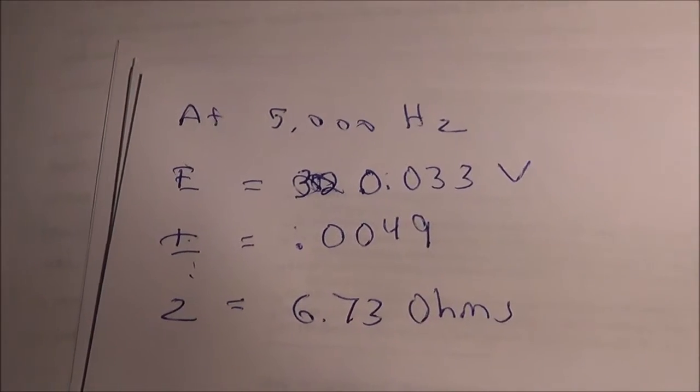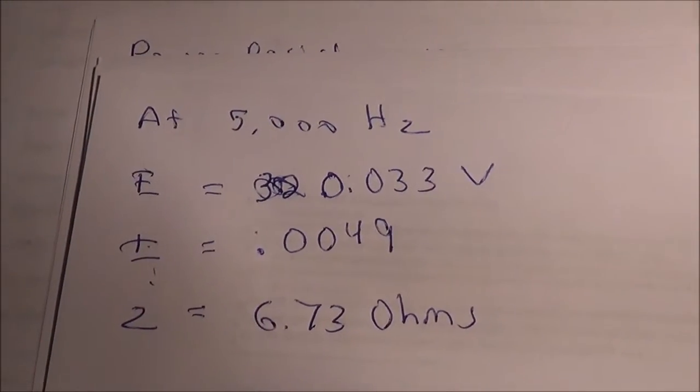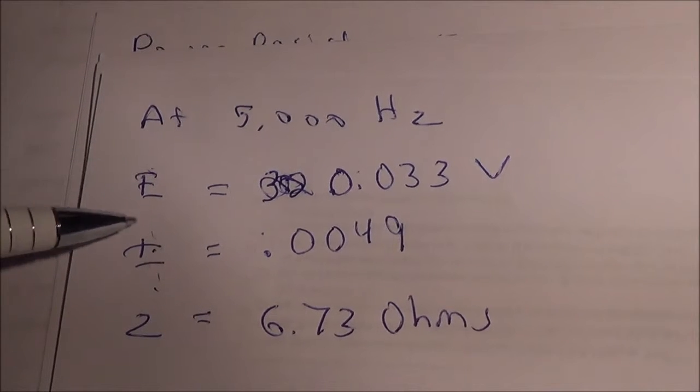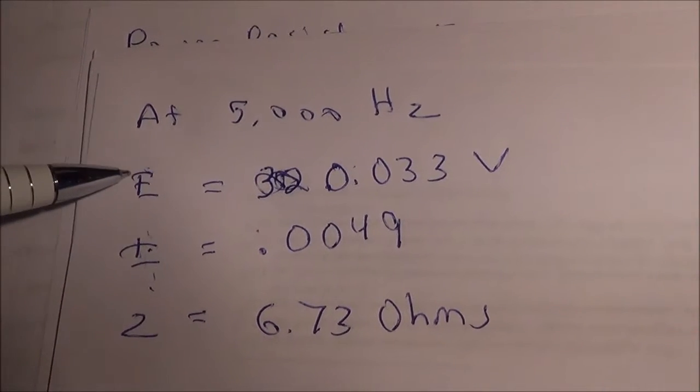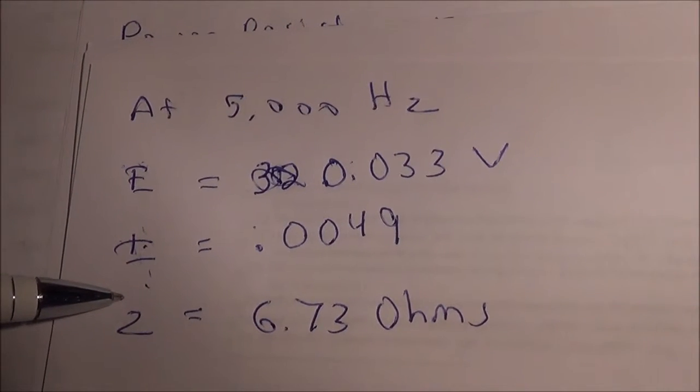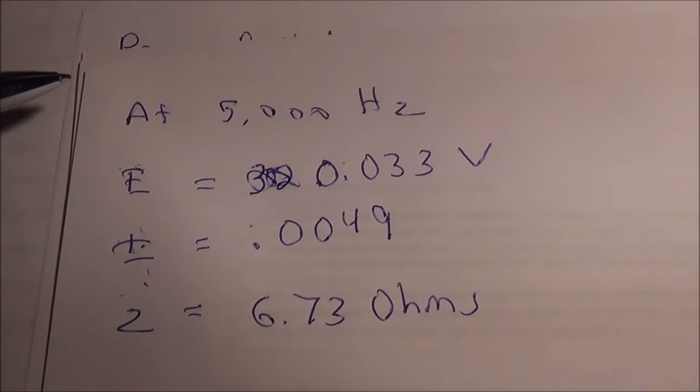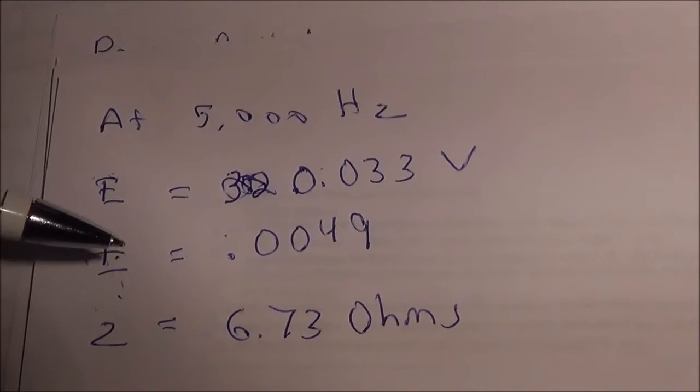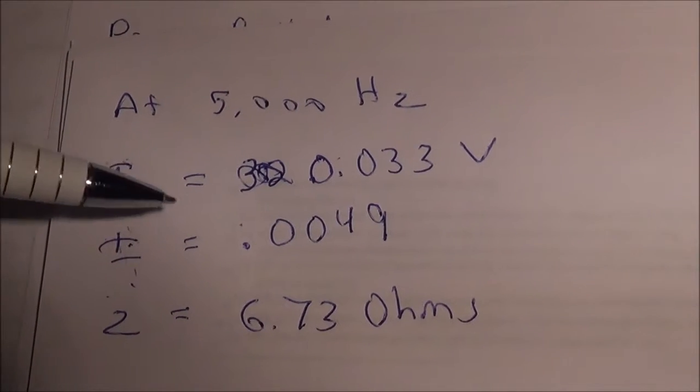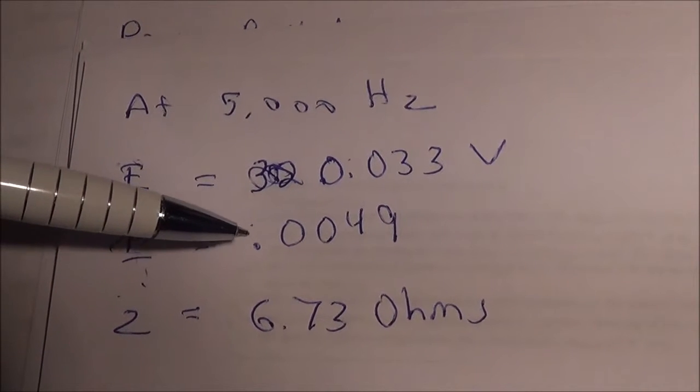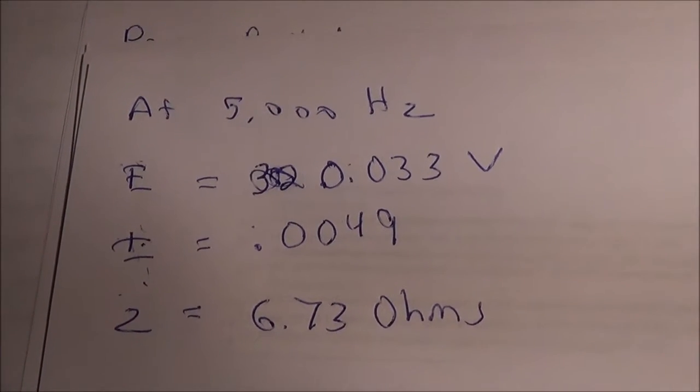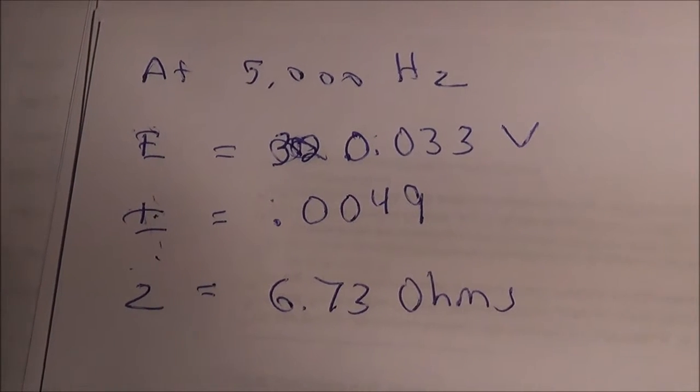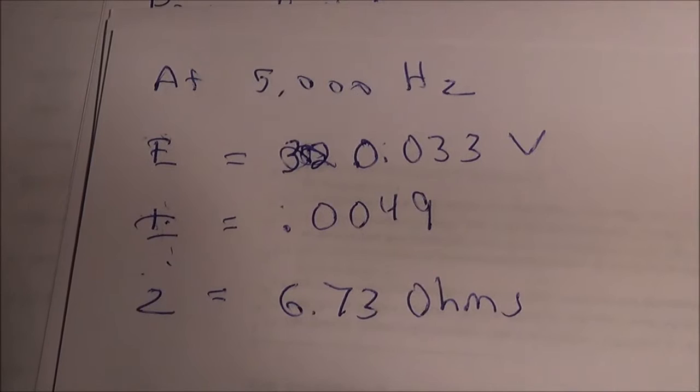Here's the math I did on my scratch sheet for 5000 Hz. I changed it around here - I wrote the voltage first and the amperes second and then the ohms third, which is probably what I should have done in the first place. I got 0.033 volts AC and 0.0049 amperes (4.9 milliamperes). In total, the impedance went down to 6.73 ohms. Looks like the higher I go, the lower the impedance. I'm going to try 10,000 Hz now.